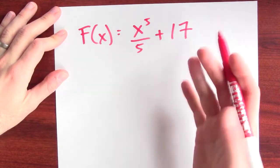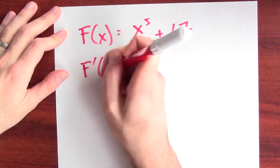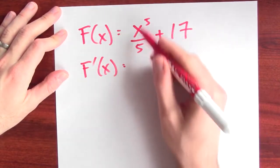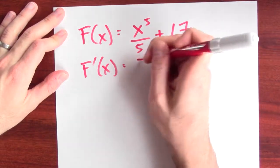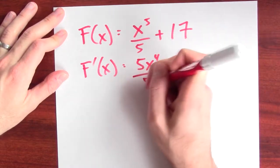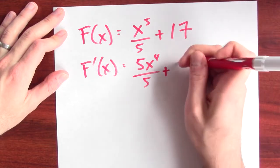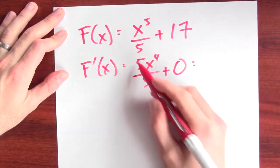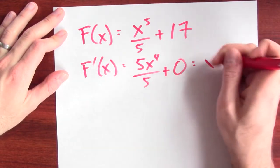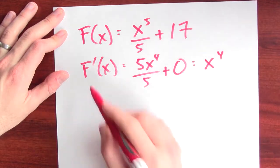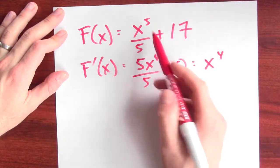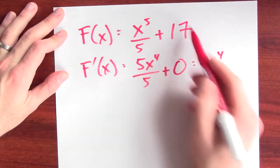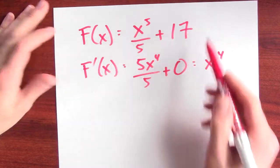And this really is an antiderivative for x to the 4th because if I differentiate this function, I get the derivative of x to the 5th over 5, which is 5x to the 4th over 5, plus the derivative of 17, which is 0, and 5x to the 4th over 5 is just x to the 4th. So, I really have found an antiderivative for x to the 4th, right here. It's x to the 5th over 5 plus 17.